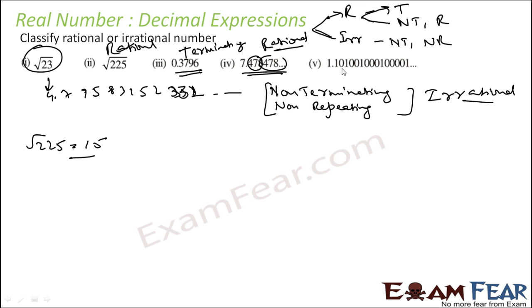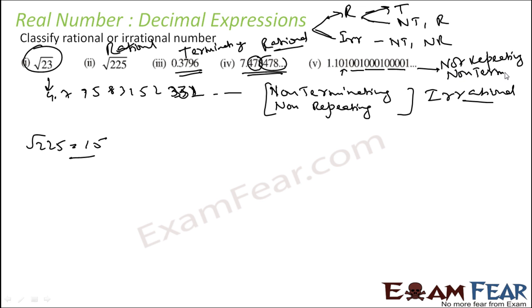For the last number, let us see if there is a repeat: 1, 0 — there is 1, 0; then 2, 1; then 2, 0; then 3, 0; then 4, 0. It is not repeating. Since it is not repeating and also not terminating, it has to be an irrational number. So the first and last are irrational numbers, and the others are rational numbers.